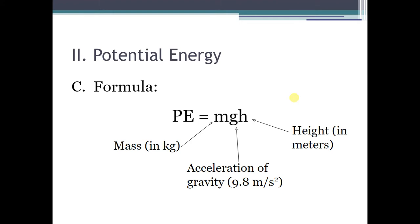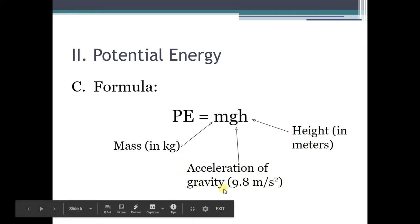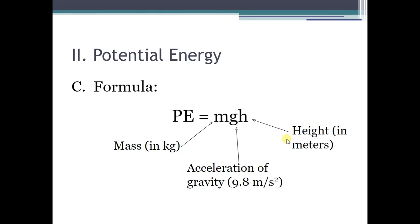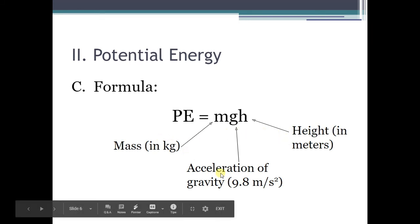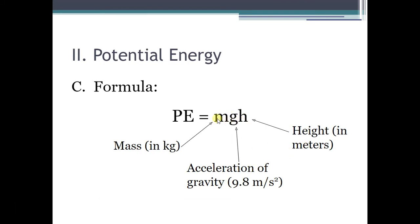We can easily figure out how much potential energy an object has if we know three things about it. First, its mass — this will usually be written in kilograms, so if you see a number followed by kg or kilograms, you'll know that's the mass. Second, the acceleration of gravity, which is always the same — it is a constant 9.8 meters per second squared, symbolized by G, and will never change in our problems. And lastly, the height in meters — the height of the object above the earth's surface. If you know these three quantities, you just multiply them together to figure out the potential energy due to gravity that the object has.